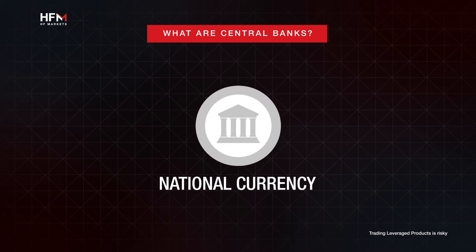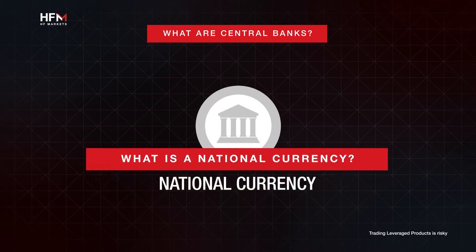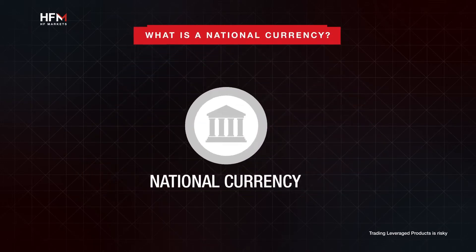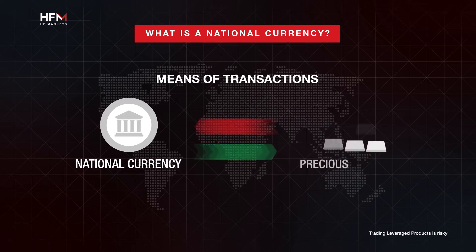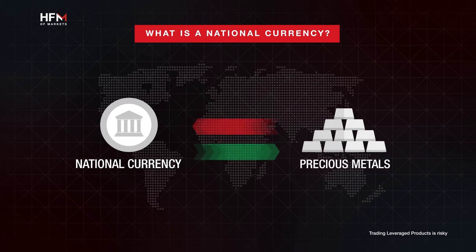This brings us to the next topic: what is a national currency? A national currency is the official means of transactions in a specific country. Until the early 20th century, national currency could be exchanged for precious metals in some fixed amount. This was known as the gold standard — more details on the gold standard will be covered in the videos to come.